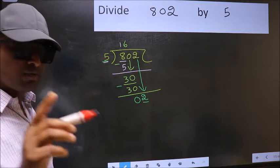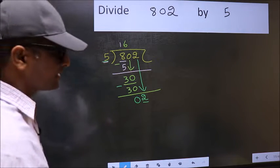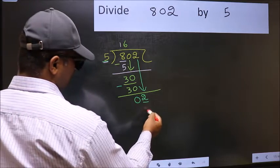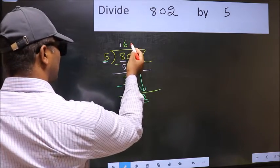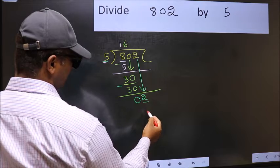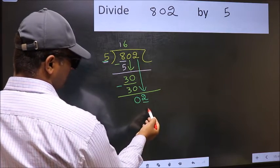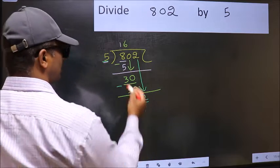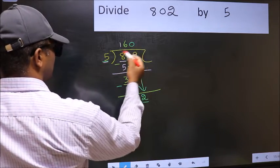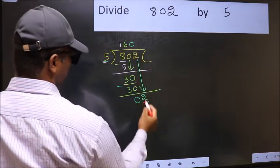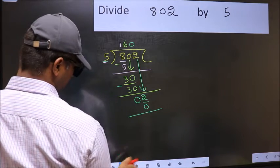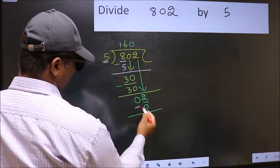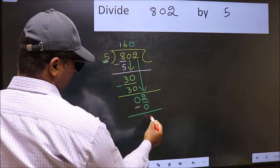Instead, what you should think of doing is, what number should we write here. If I take 1, we will get 5, but 5 is larger than 2. So what we should do is we should take 0. So 5 into 0, 0. Now you should subtract. 2 minus 0, 2.